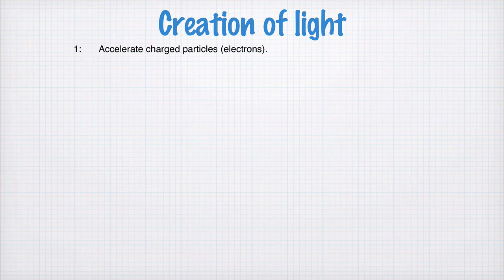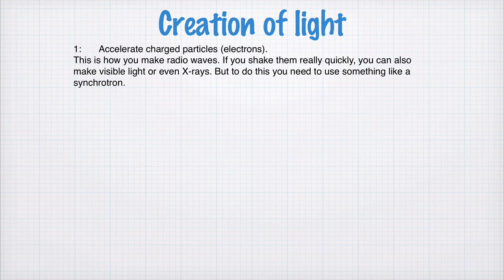So if I take a charged particle like an electron and I shake it up and down, it oscillates. That oscillating electric charge creates an oscillating electromagnetic field. This is how you make radio waves.